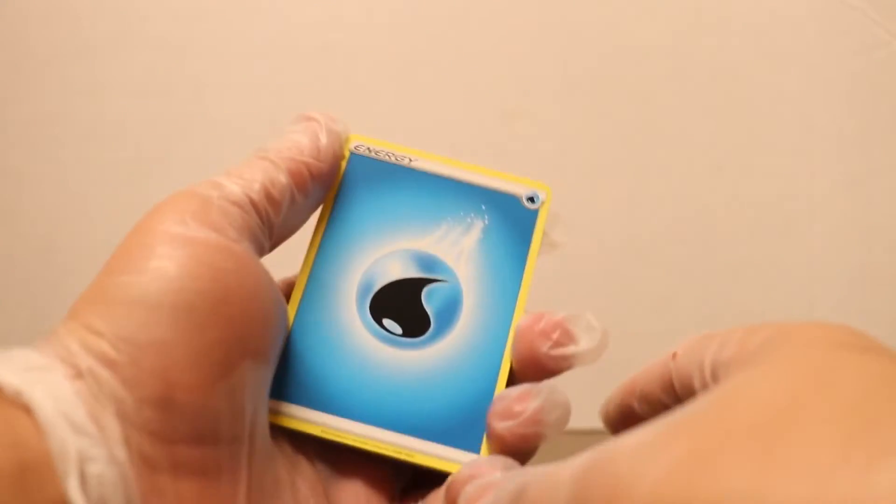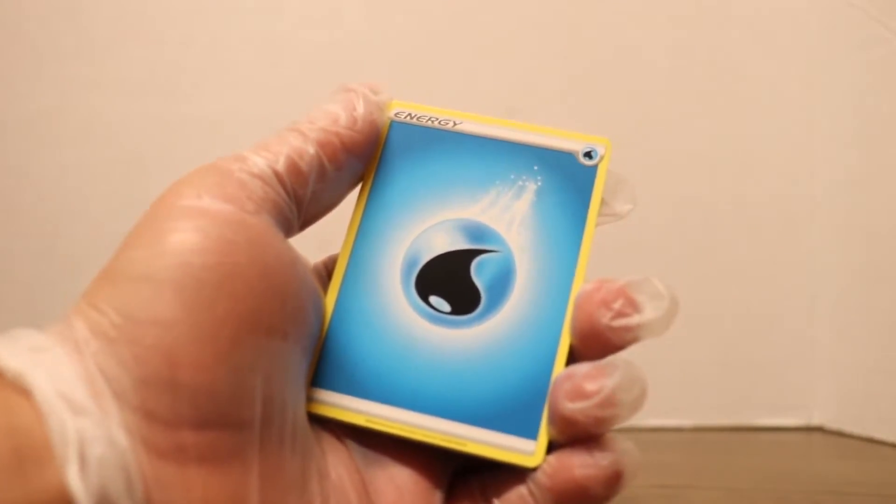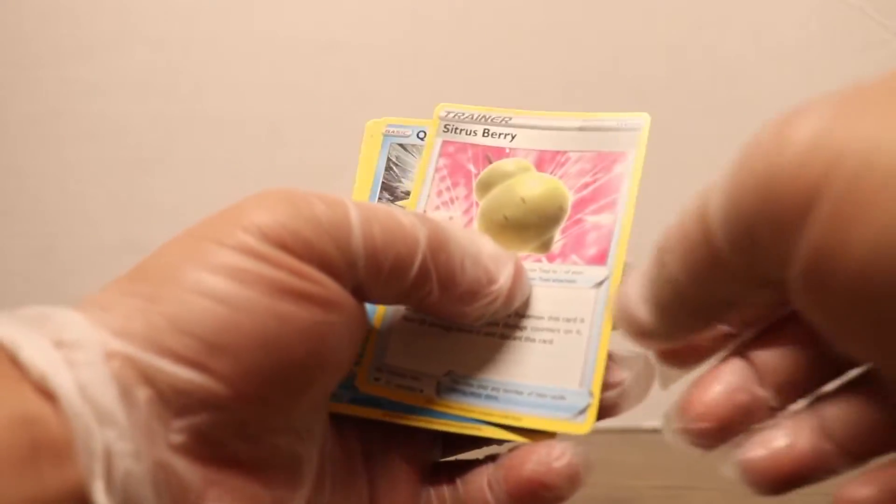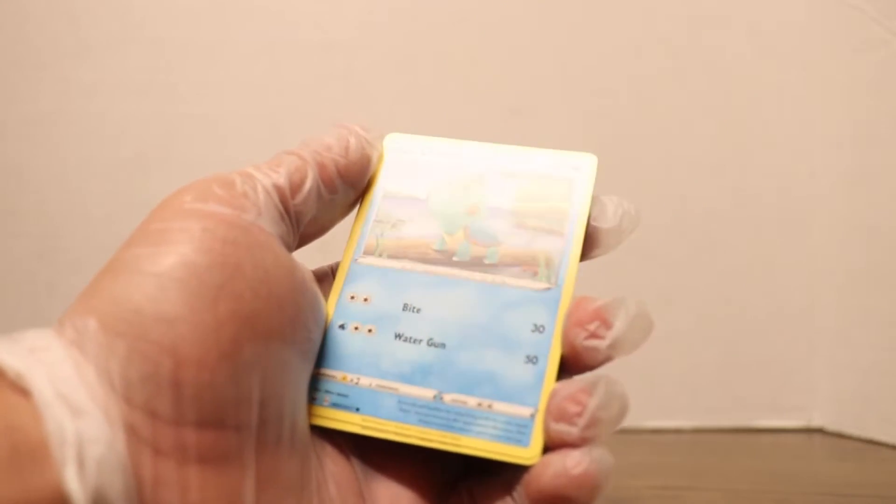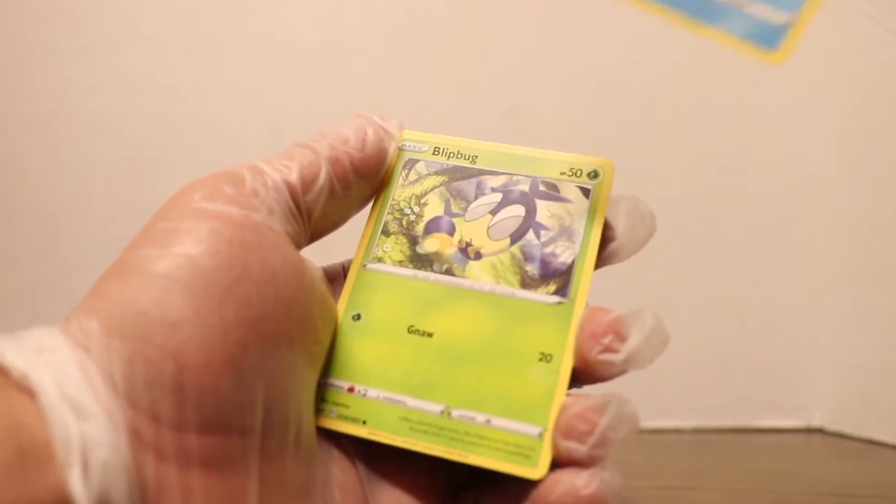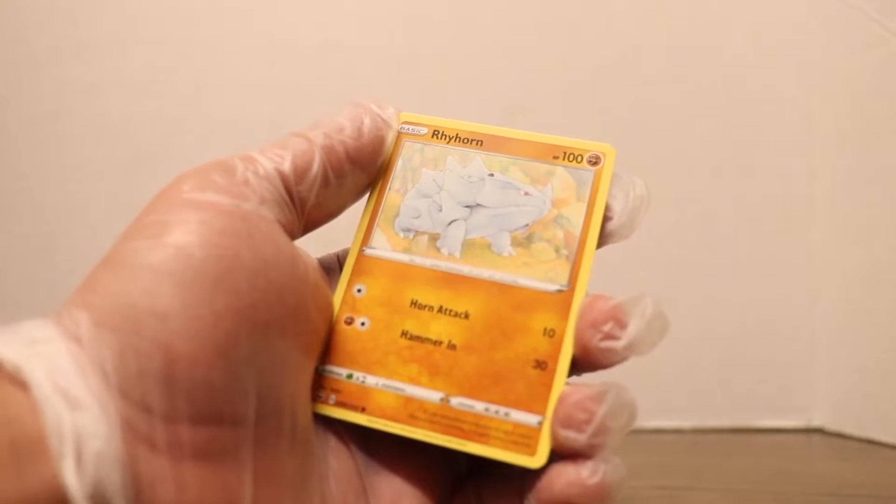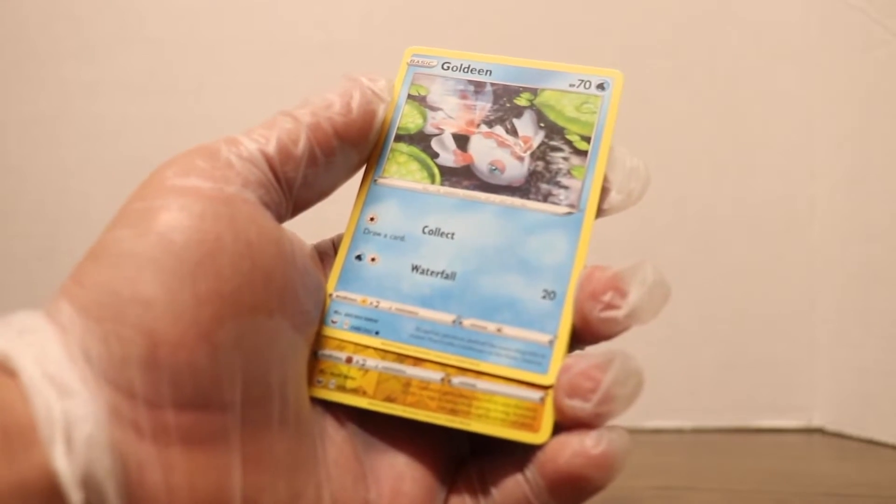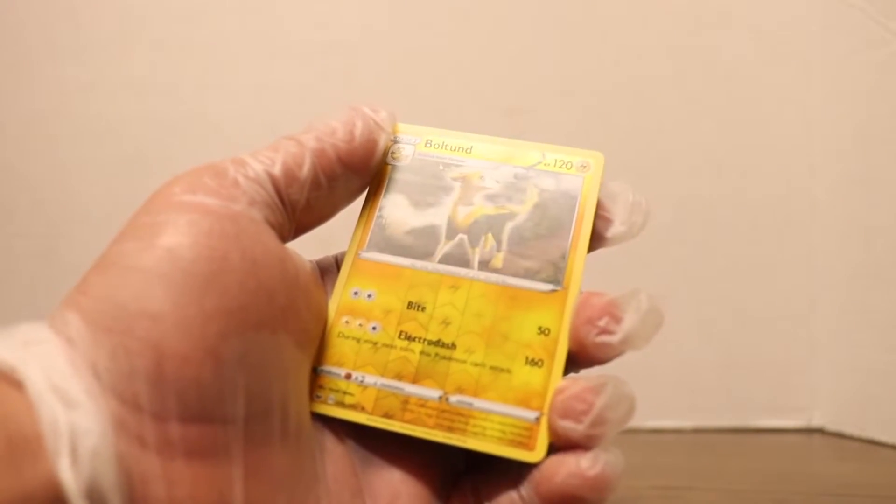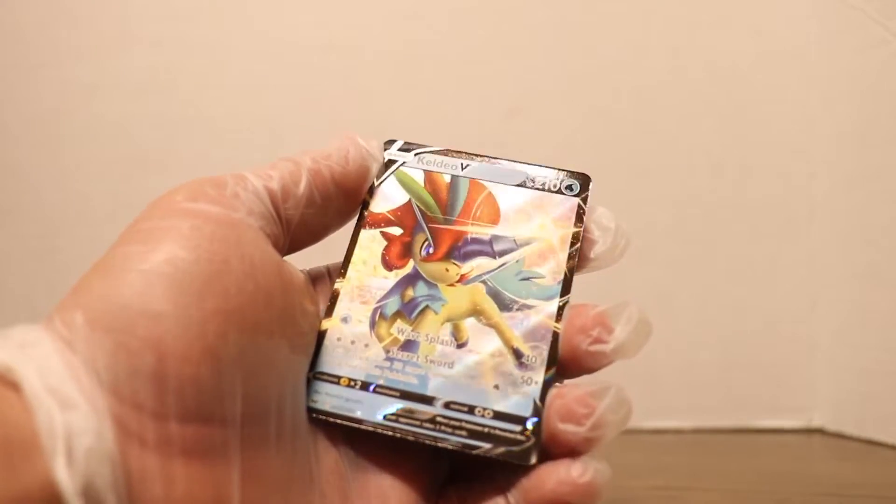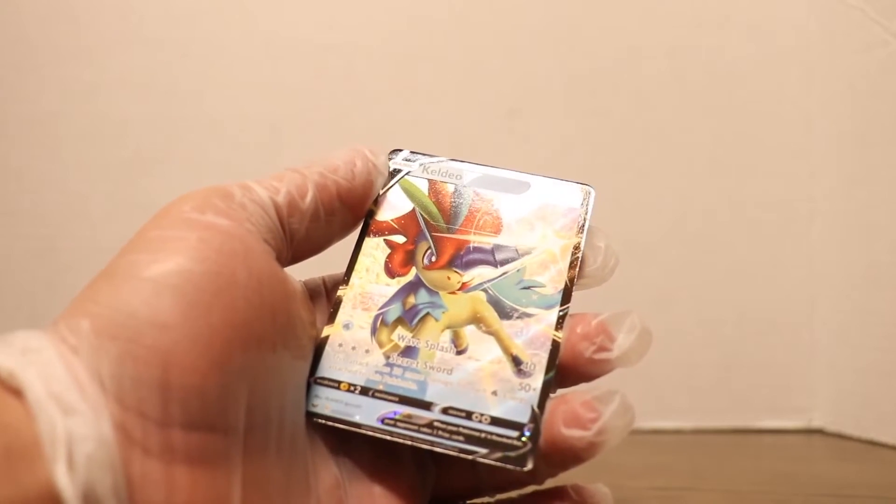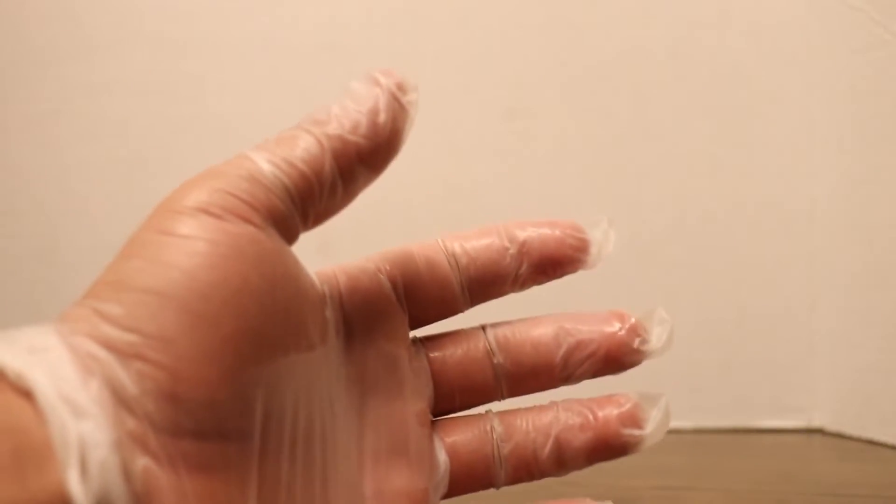If we can get a gold Zacian in today's video, it would be pretty dang amazing. Or gold Zamazenta, but I'm more for the Zacian. Starting off with Water energy, Pal Pad, Sitrus Berry, Quilfish, Chewtle, Blipbug, Rhyhorn, Clobbopus, Goldeen reverse, Boltund, and a Keldeo V. Hey! All right, another first today. That is what I'm talking about.